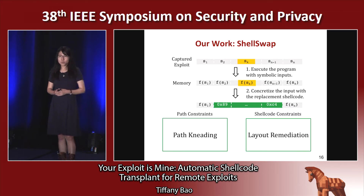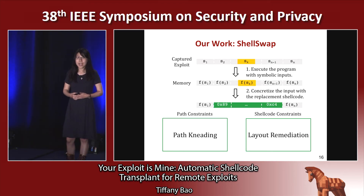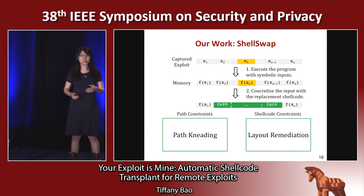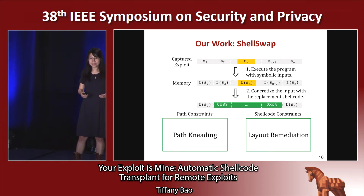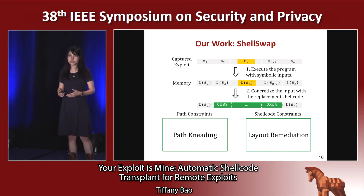We propose our work, ShellSwap, which is based on symbolic execution. In addition, we propose two methods to resolve those contradictions. The first method is called path knitting, which is basically to change the path constraints. And the second is called layout remediation, which is to change the shellcode constraints. We'll start with layout remediation first.